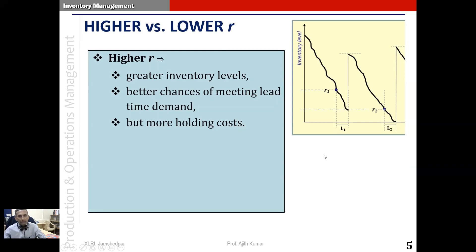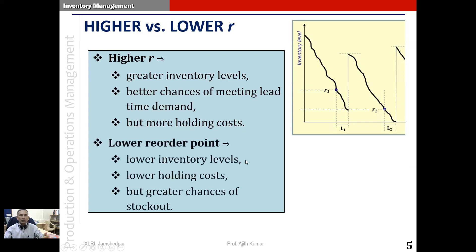We can see that if the reorder point is higher, that means we will have greater inventory levels in the system. There are better chances of meeting the lead time demand. But higher R will also imply greater holding costs. If we keep the reorder point very low, then it means that the inventory levels in the system will also be low. And that will involve lower holding costs. But the chances of a stockout are greater.